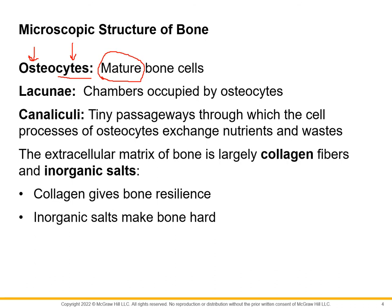Osteocytes live in little hollow cavities called lacunae — you can remember it like a cocoon. Lacuna literally means a crib or house, and it's the little area where osteocytes live. Each lacuna has tiny passages called canaliculi — a Greek way of saying small canal — that allow fluid to come and go, bringing in nutrients and removing waste.